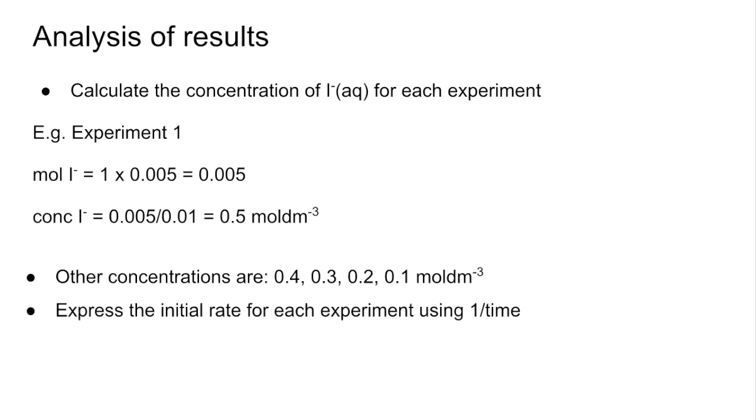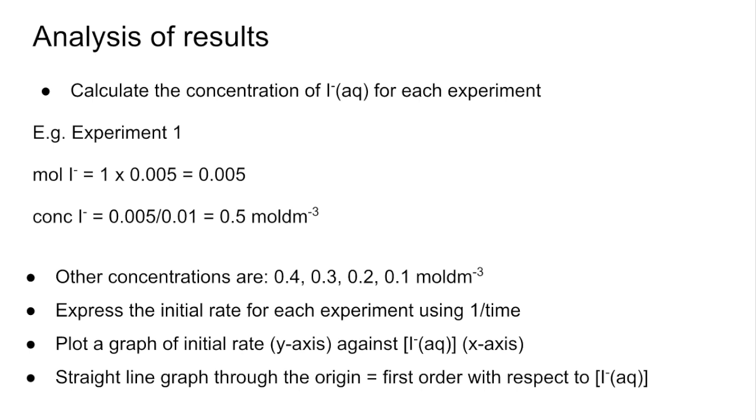We're going to use the 1 over time method to express the initial rate. We'd need to plot a graph of the initial rate on the y-axis against the concentration of I⁻ on the x-axis. If it was first order with respect to the I⁻ concentration, we should see a straight line graph through the origin.